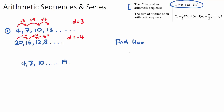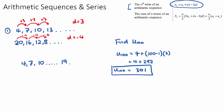Using our example, to find the 100th term: U100 equals U1, which is 4, plus 100 minus 1 multiplied by our common difference of 3. That gives us 4 plus 99 times 3, which is 297, so 301 will be our 100th term. In some IB exam questions they may give you a term value of 301 and ask what term number it is — you'd need to use algebra and work backwards to find n.